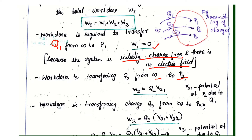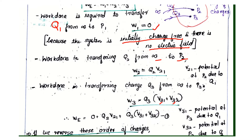W3 is equal to Q3 into V31 plus V32. The potential at point 3 is due to Q1, which is V31, and due to Q2, which is V32. Therefore, W3 equals Q3 into V31 plus V32.